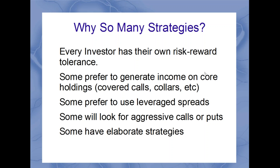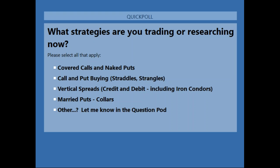Let me launch a poll. I'm curious to know what option strategies you are trading or researching right now. I've allowed multiple answers, so if you trade covered calls on core holdings but also use credit spreads with 15 to 20 percent of your account, and occasionally do straddles and strangles around earnings, include all of those. If you don't see your strategy listed, click 'Other' and send me what you're trading in the question pod.